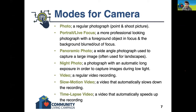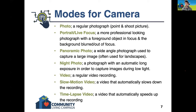The third mode is a panoramic photo — a wide-angle photograph used to capture a large image. This is what you would probably use if you wanted to take a picture of a landscape, or if there was a big scene in front of you and you wanted to make sure you got all of it. These are the photos that are like a really, really long rectangle. It is a slightly more complicated process, so I'd recommend if you're new to taking pictures with your device, play around with some of the other options first.